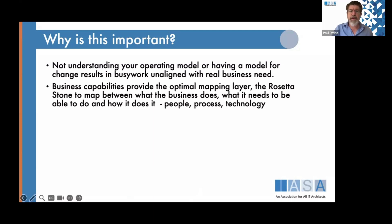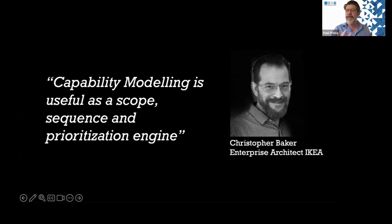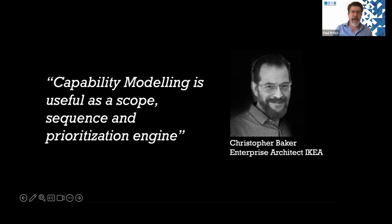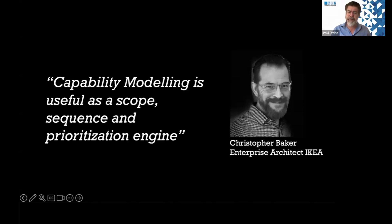We use these capabilities in architecture as a scope, sequencing, and prioritization engine. We use them to understand what we need to focus on to develop and deliver the best business possible. As architects, we can use it for project prioritization, investment in technology areas, speaking the language of stakeholders, and relating projects and products together to outcomes that business stakeholders can best understand.